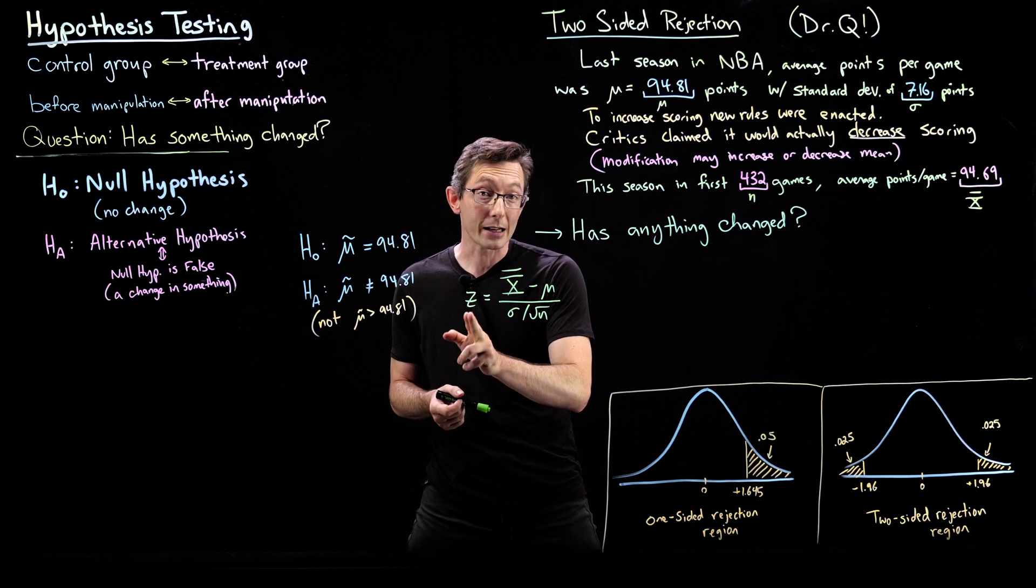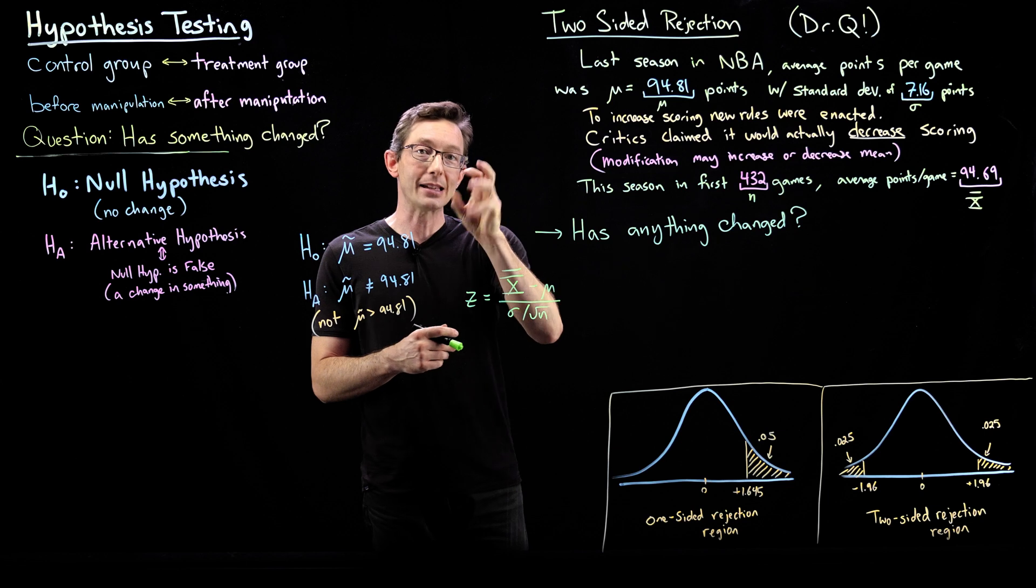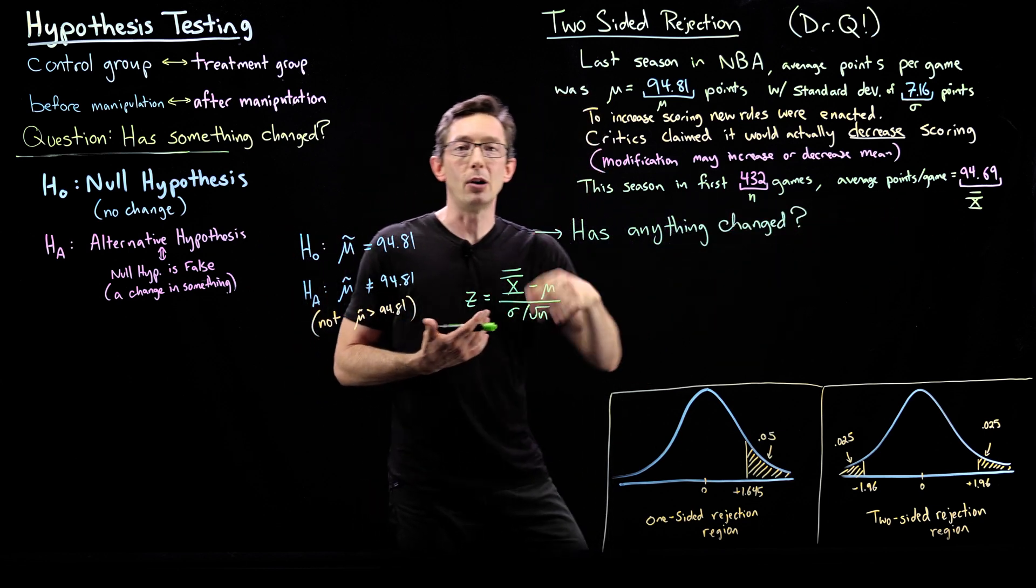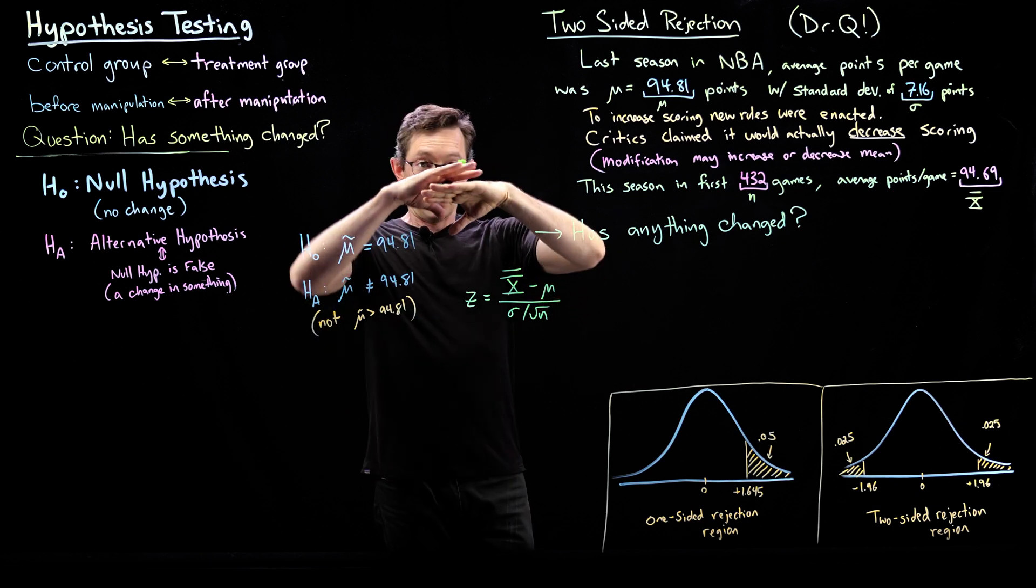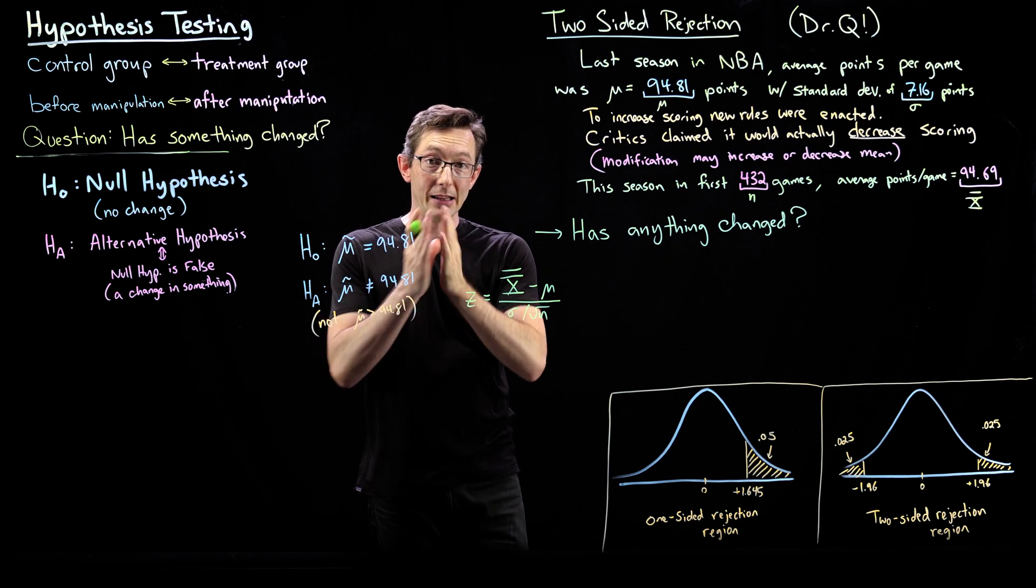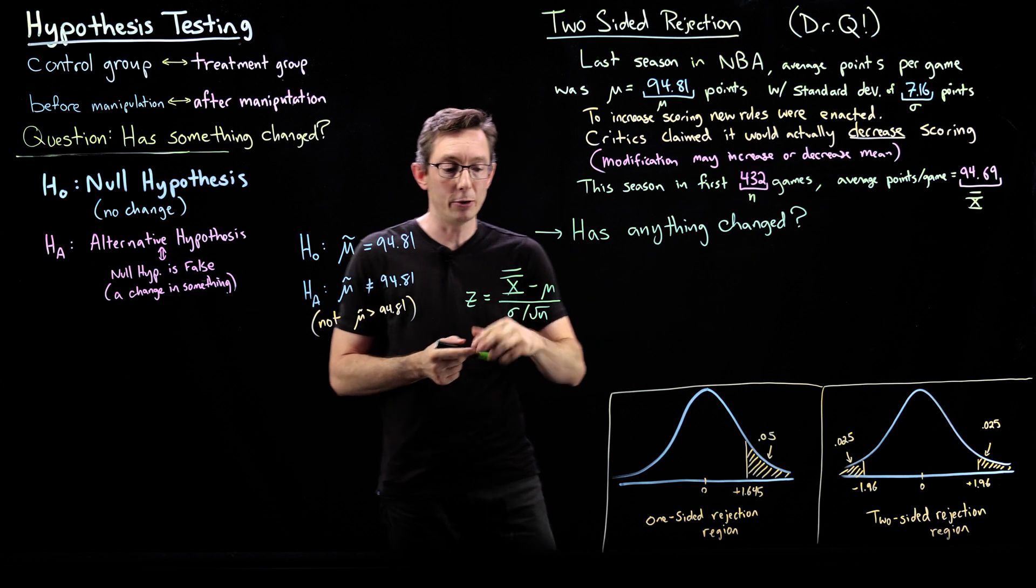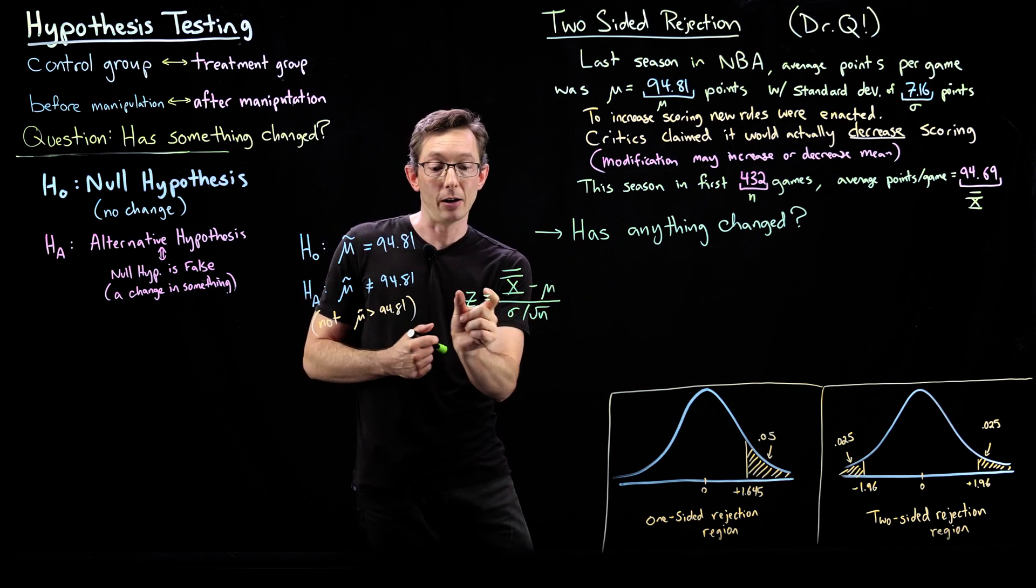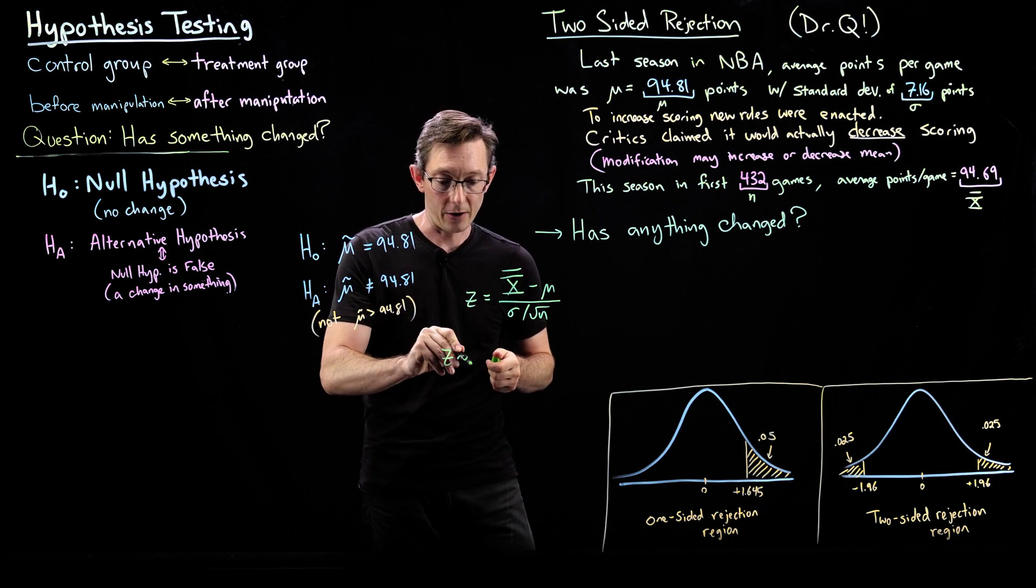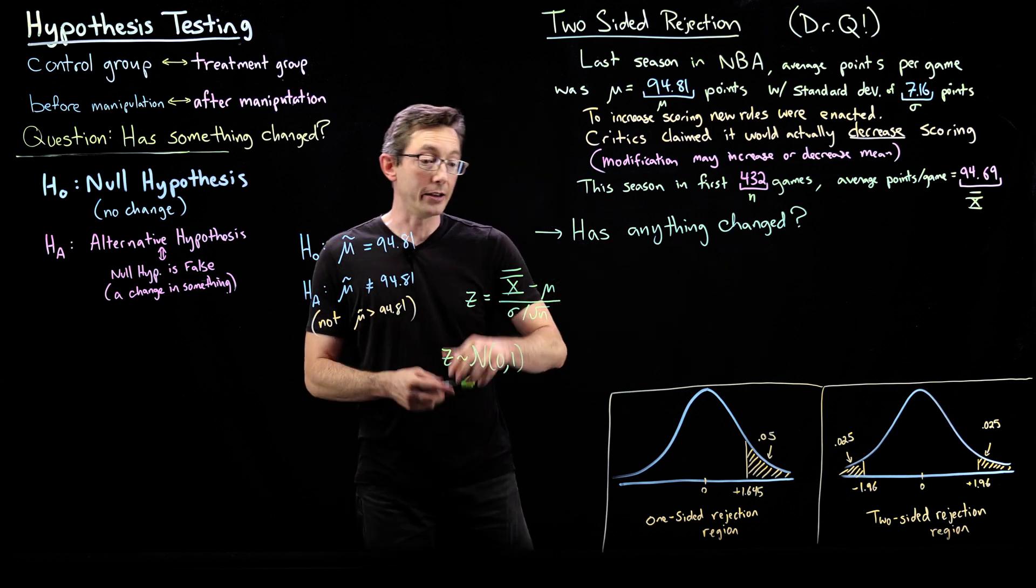This should be approximately normally distributed because x bar, we assume each of these games is independent IID. That's a bad assumption, but let's just assume it's true. Then x bar would be a Gaussian normally distributed variable with a center around some mean value and some spread. We know from the central limit theorem that this is a normally distributed variable. If I subtract the mean and divide by the standard error, this is a unit normal variable. Z is from nominally a unit standard normal distribution.